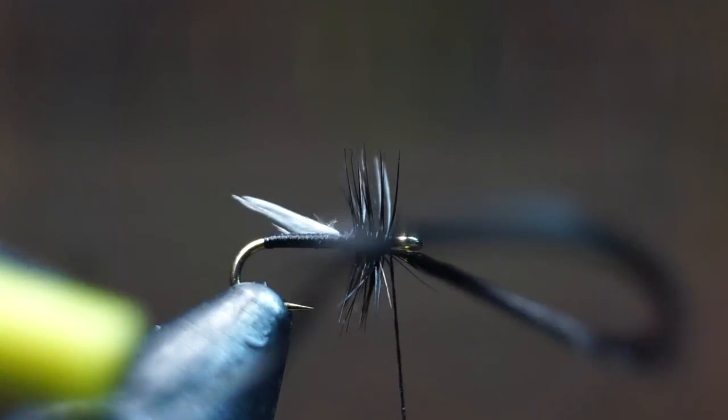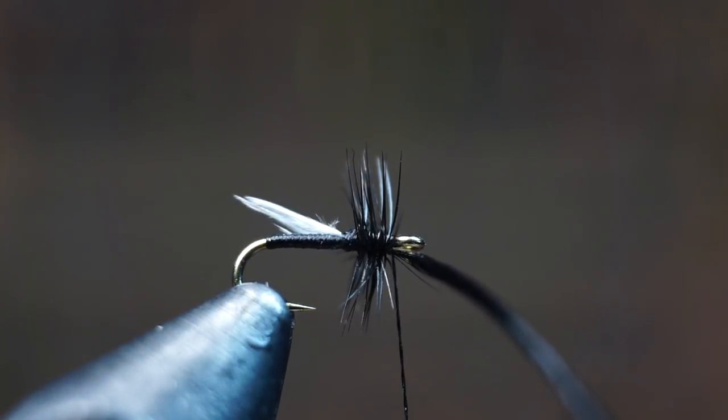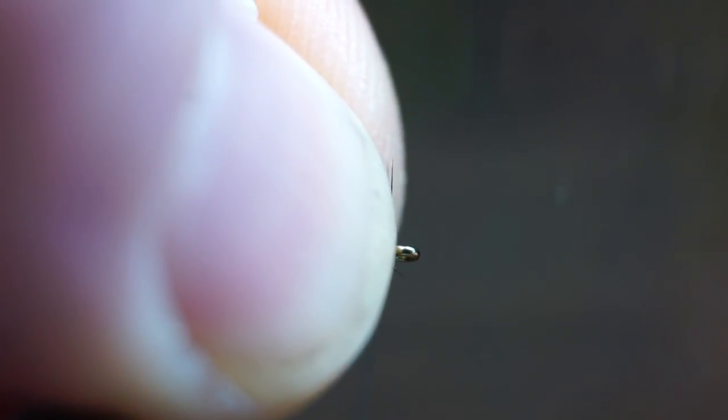Then let go of the feather with your pliers and pull all the fibers rearward. It took a few strokes to coerce the fibers back, so just keep stroking them and they will angle rearward. Then make a few wraps in front of them to help keep them aligned backwards and out of the way of the eye.